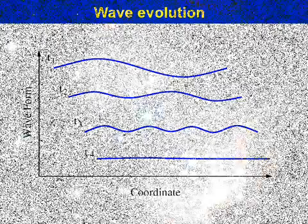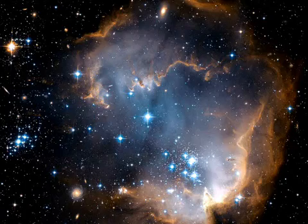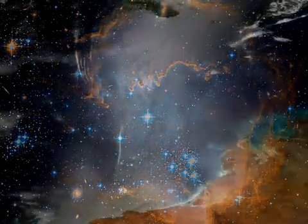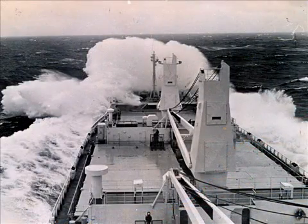Wave turbulence crops up in diverse contexts including, for example, astrophysics, oceanography, and solid-state physics. It is believed to play a role in the creation of the giant rogue waves on the ocean that sometimes appear from nowhere and can overwhelm even the largest ships.